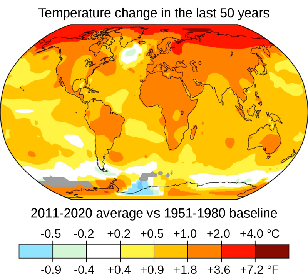Global warming became the most popular term after NASA climate scientist James Hansen used it in his 1988 testimony in the US Senate. In the 2000s, the term 'climate change' increased in popularity. Global warming usually refers to human-induced warming of the Earth system, whereas climate change can refer to natural as well as anthropogenic change. The two terms are often used interchangeably. Various scientists, politicians and media figures have adopted the terms 'climate crisis' or 'climate emergency.' Oxford Dictionary chose 'climate emergency' as its word of the year in 2019.